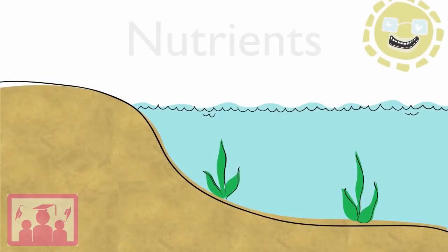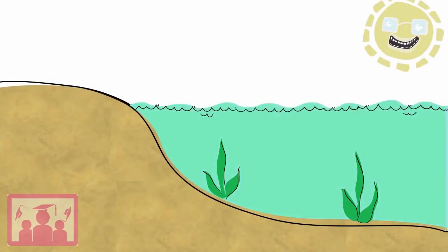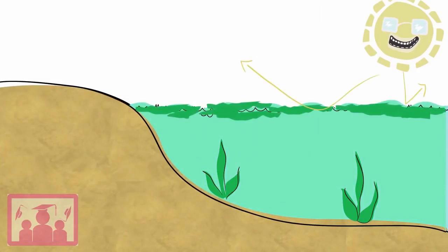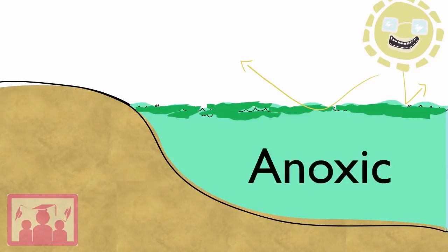So, eutrophication happens when nutrients are added to water, which causes an algal bloom, cutting off sunlight and feeding bacteria. The bacteria use up oxygen in the water, which becomes anoxic, causing everything living in the water to die.